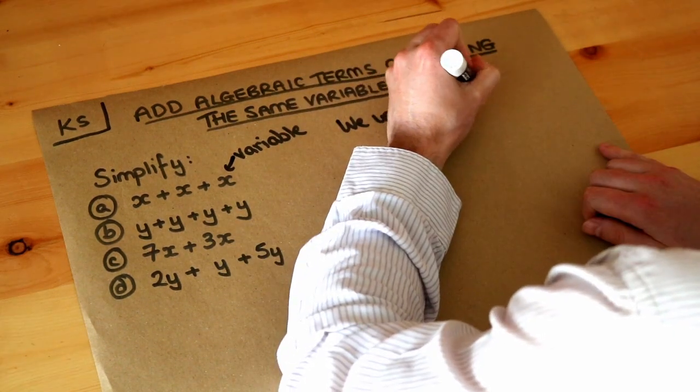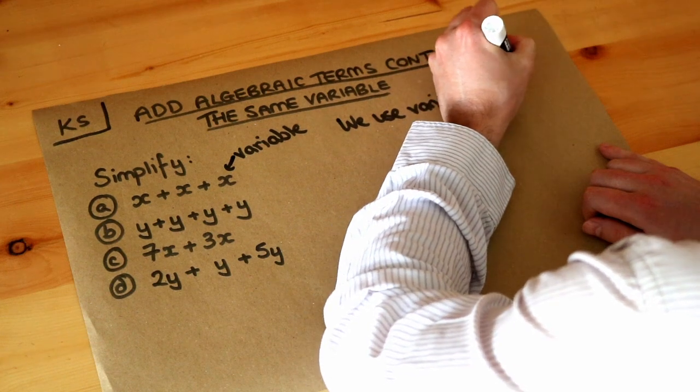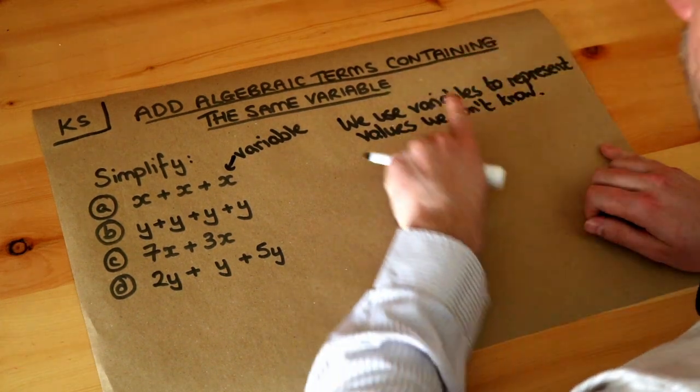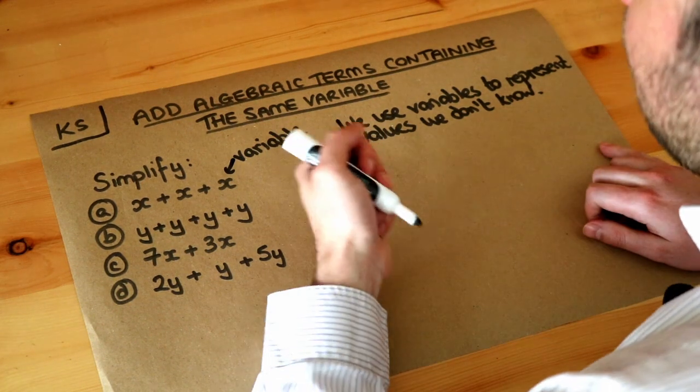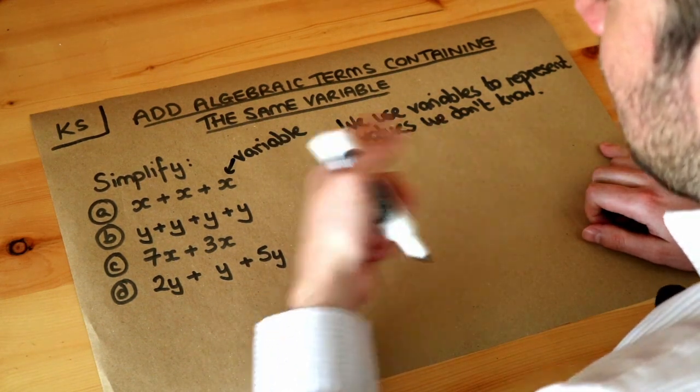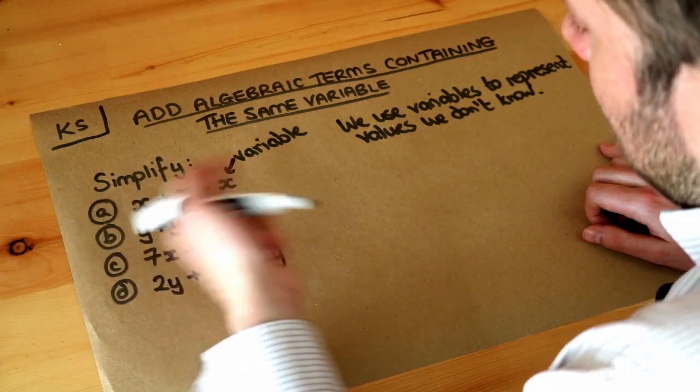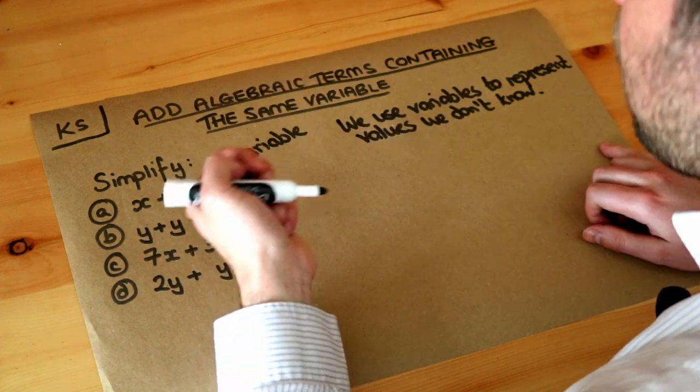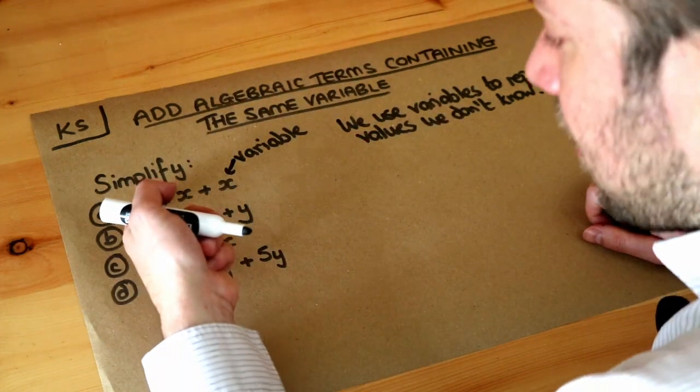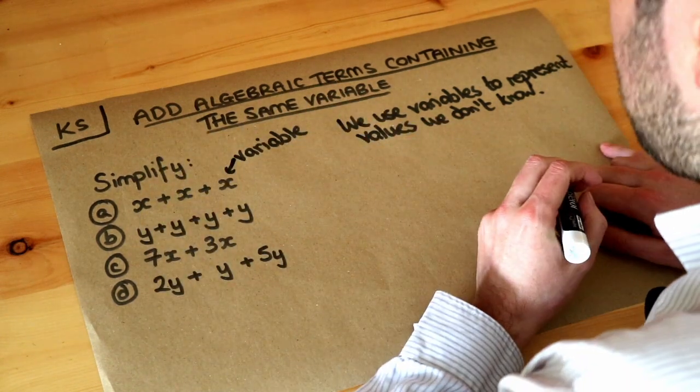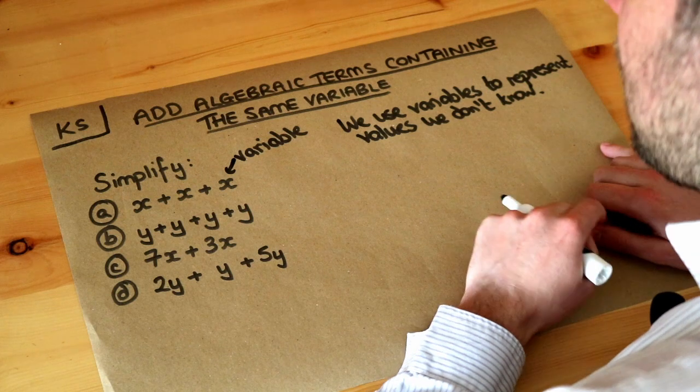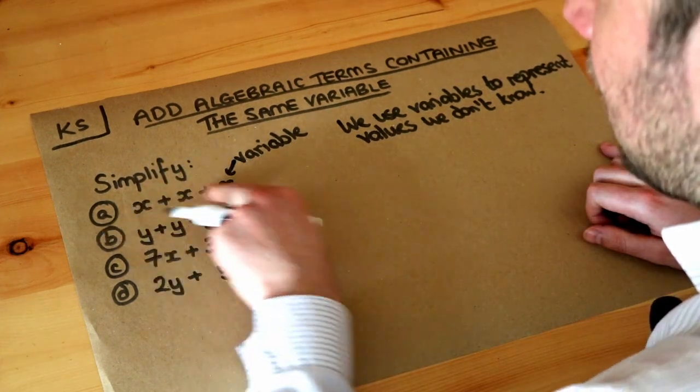We often use variables to represent things that we don't know. These variables represent values we don't know and we use generally single letters. The whole point of algebra is that when you represent values we don't know we can then turn that into an equation, solve the equation to find the value of what x is or what y is to solve some kind of practical problem. But for the moment all we're going to do is simplify these expressions to make them simpler.